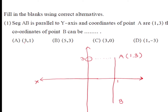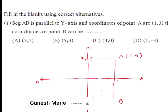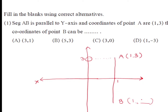Can (3, 1) be the coordinates of point B? Since line AB is parallel to the y-axis, the x-coordinates of both points A and B must be the same. So if the x-coordinate of point A is 1, then the x-coordinate of point B must also be 1, and the y-coordinate can be any value. Checking option A — its x-coordinate is 3, so these are not the coordinates of point B.